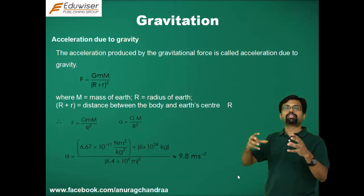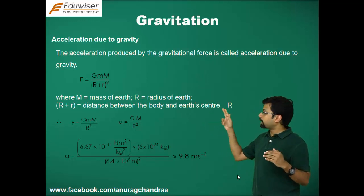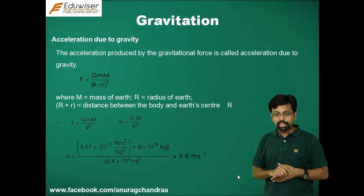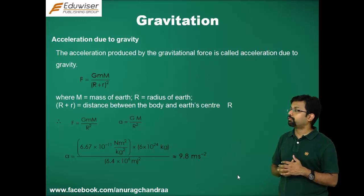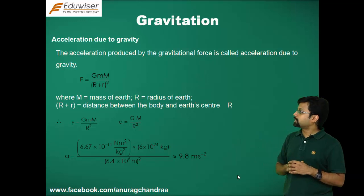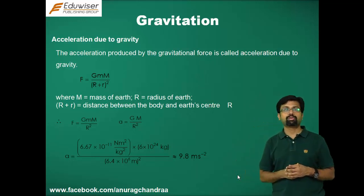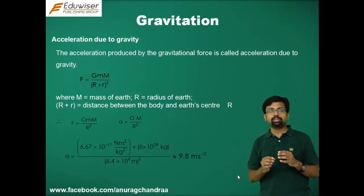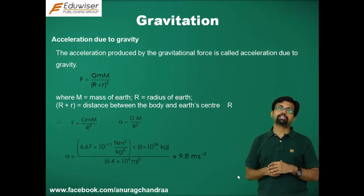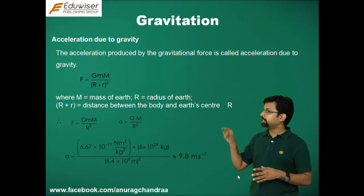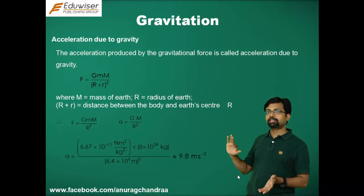Since G, M (mass of earth), and R (radius of earth) are all constants, their combined value GM/R² is constant. Plugging in G = 6.67 × 10⁻¹¹, M ≈ 6 × 10²⁴ kg, and R = 6400 km, the value of GM/R² comes out to approximately 9.8 m/s². This value is called the acceleration due to gravity, denoted by small g, and is the acceleration of a freely falling body.